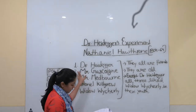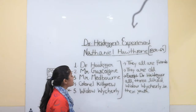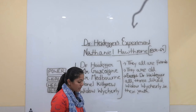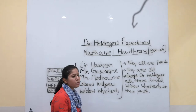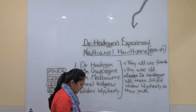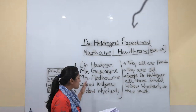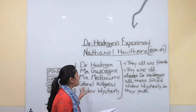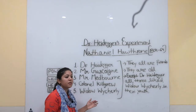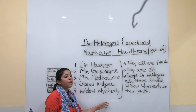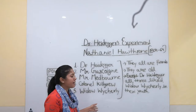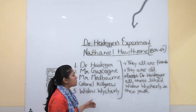Dr. Heidegger explains each friend's past mistakes. Mr. Gascoigne was a politician who did disreputable things in politics. Mr. Medbourne was a merchant who gambled everything away and now has nothing, like a beggar. Colonel Kilgrew had been very lustful and sinful, and his health is completely broken. The Widow Wycherly was very beautiful and claimed great beauty, but had caused scandals. They all want to go back to their youth to undo these mistakes.